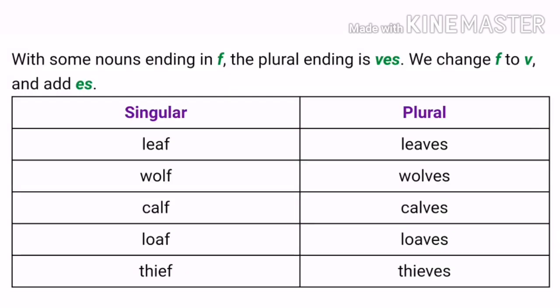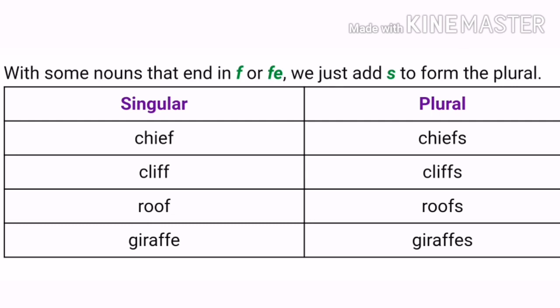Another rule: with some nouns ending in F, the plural ending is VES. We change F to V and add ES. When a noun ends with the letter F, we need to change that letter F and write VES with the noun. See the example: leaf — this word ends with the letter F. So we change F and add VES — it becomes leaves, spelled L-E-A-V-E-S. See another example: wolf — it becomes wolves because the last letter is F, so we change F and add VES. And with some nouns that end in F or FE, we just add S to form the plural. See the word chief — when we change it to plural, it becomes chiefs. We only add S.